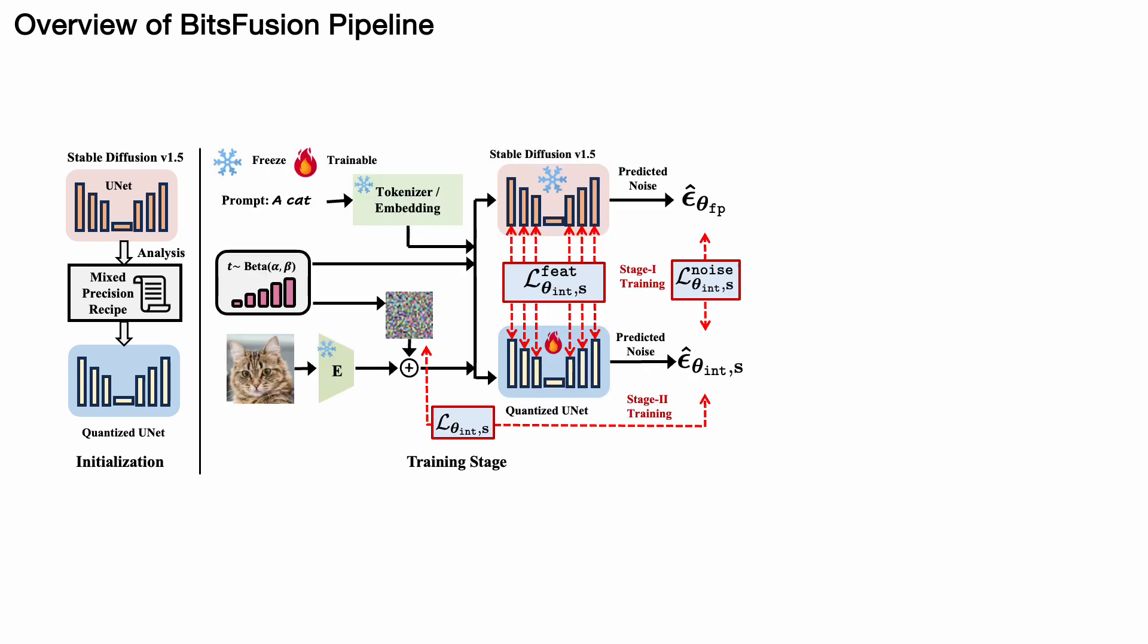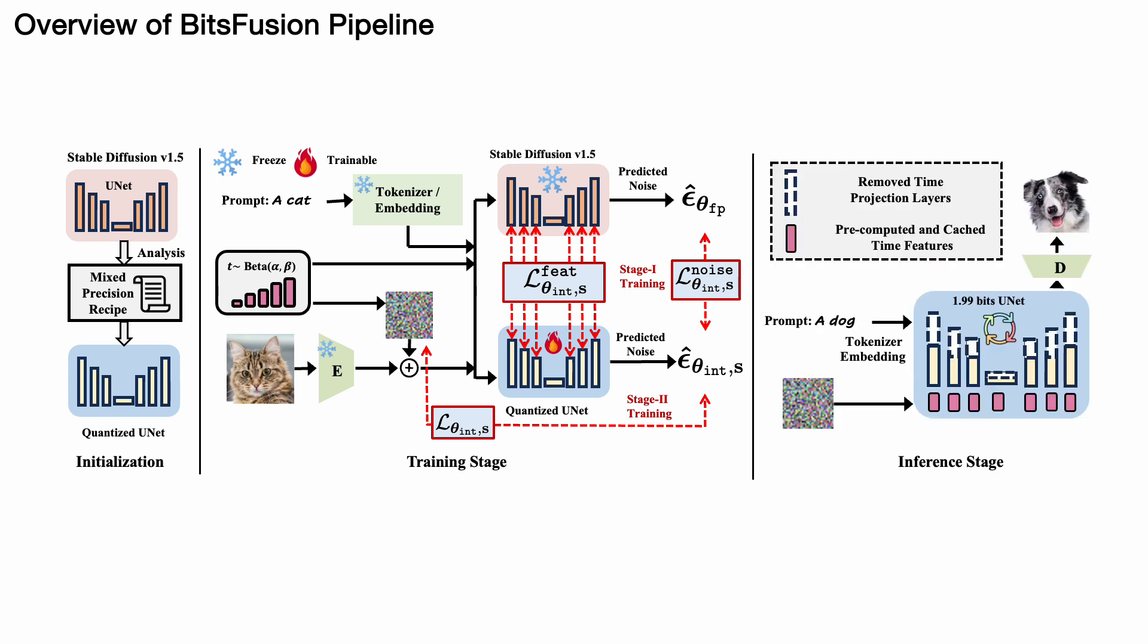Second, during the training stage, we propose a two-stage training pipeline to mitigate quantization errors through quantization-aware training methods to obtain a 1.99-bits model. During the inference stage, we integrate pre-cached time features into the 1.99-bits U-net to generate high-quality images.